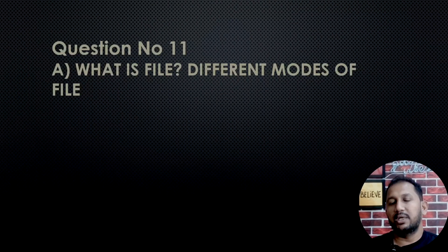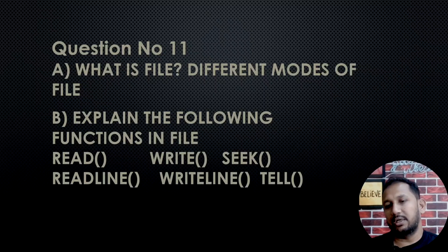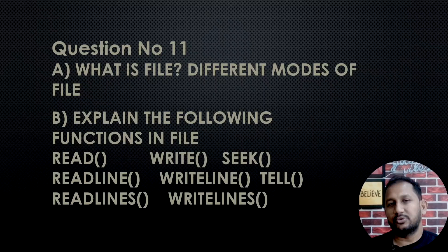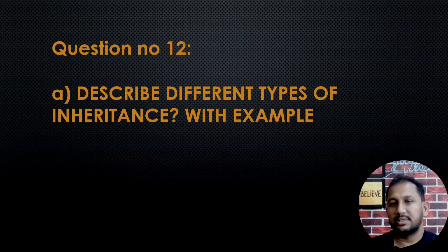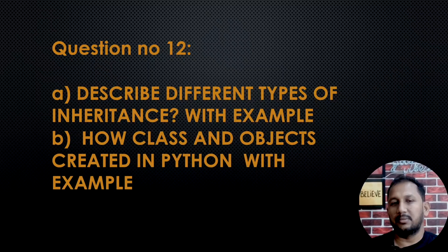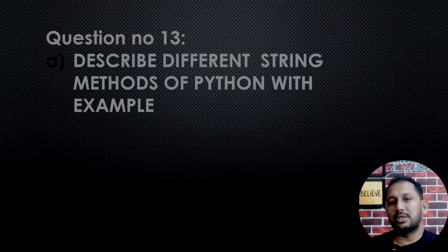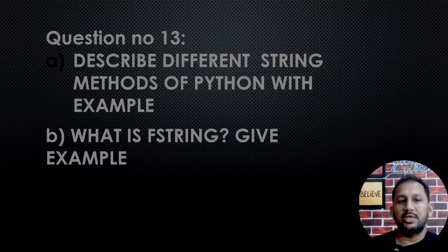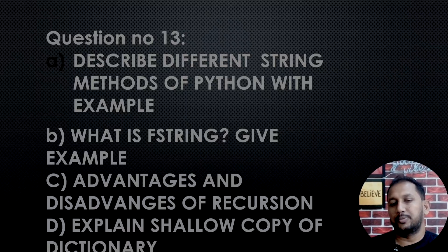Question number 11: What is file? Different modes of file. Explain the following functions in file: read, write, seek, readline, writeline, tell, readlines, writelines. How file class is created? Question number 12: Describe different types of inheritance with example. How class and object is created in Python with example? Describe class variable and instance variable. Question number 13: Describe string methods of Python with example. What is API string? Give example of formatting. Advantage and disadvantage of recursion. Explain shallow copy of dictionary.